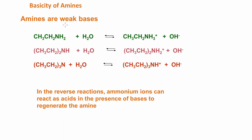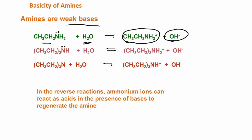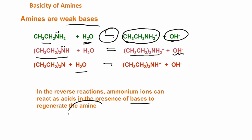Amines are weak bases, and again, we have that lone pair of electrons on the nitrogen, so it's able to bond with a proton very easily. We have the base here — the ethylamine — reacting with water, and we produce this ethylammonium ion and the hydroxide ion. Here we have a secondary amine, diethylamine in water — it's going to pick up a proton from the water and we have this diethylammonium ion and hydroxide ion. And the same here for this tertiary amine. These are reversible reactions, so the ammonium ions can react as acids in the presence of bases in order to regenerate the amine.